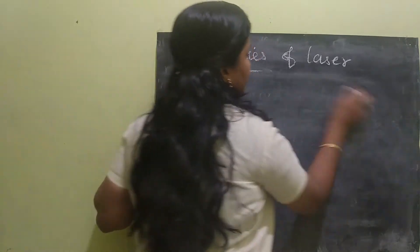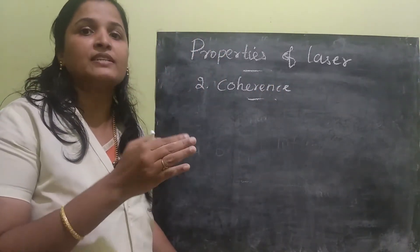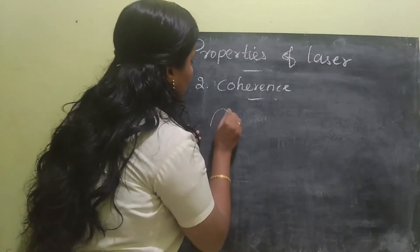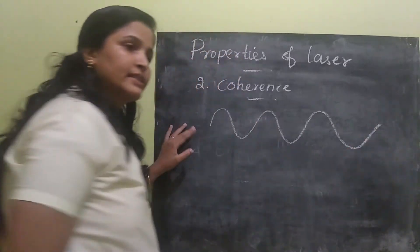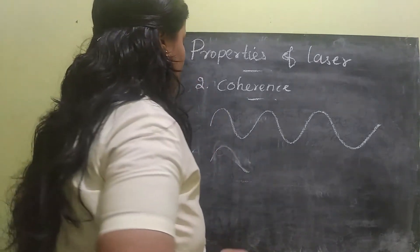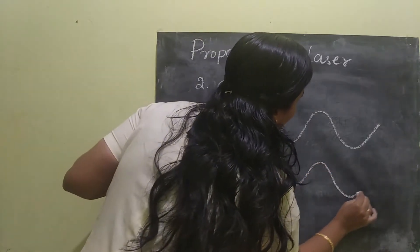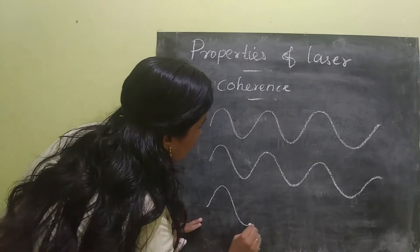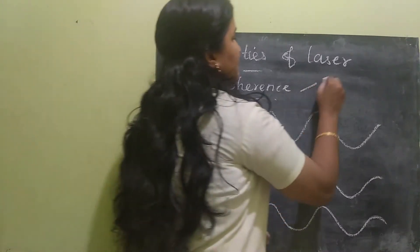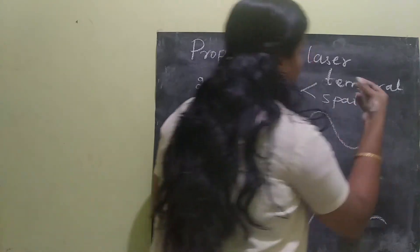The next property is coherence. Coherence means how much it is related. To illustrate that, we will draw some background — this is the wave pattern of a laser beam, and I will have another laser. There are two types of coherence: one is temporal coherence and the next is spatial coherence.